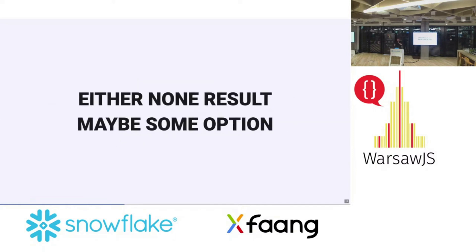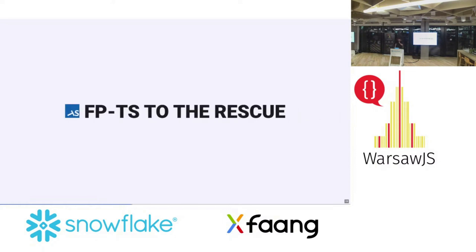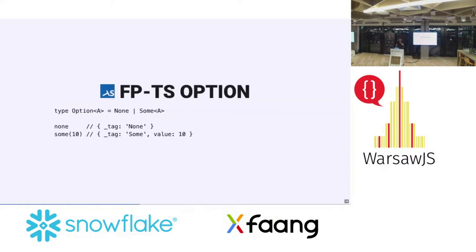There may be an option to make this more manageable thanks to functional programming, and FP-TS can rescue us here. There is an Option type, which is a tagged union that can be used instead of null or undefined — it's a pretty simple object with just a tag and some value.